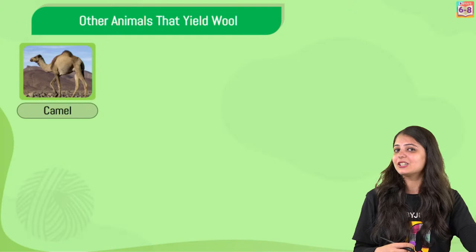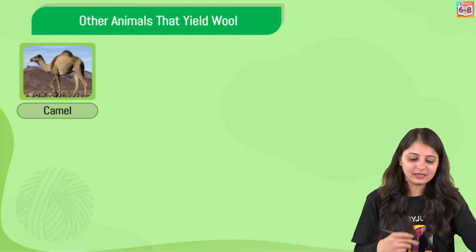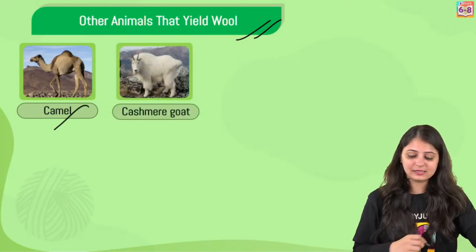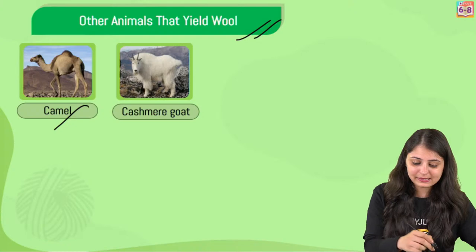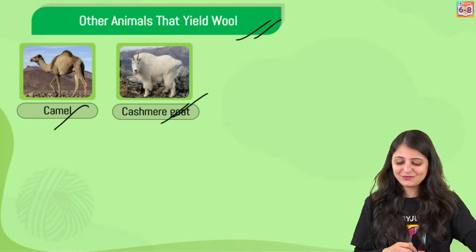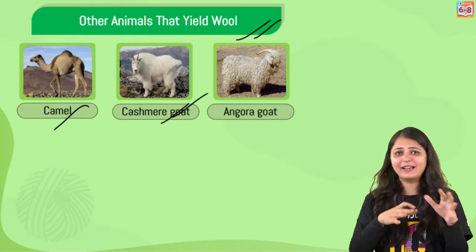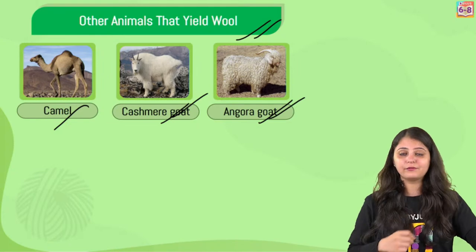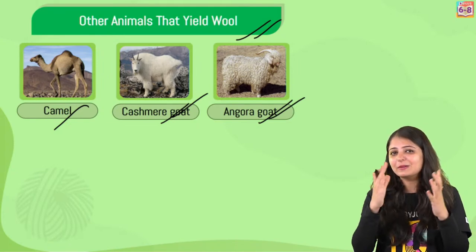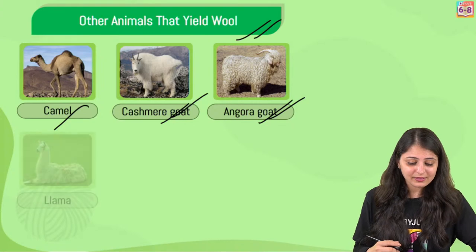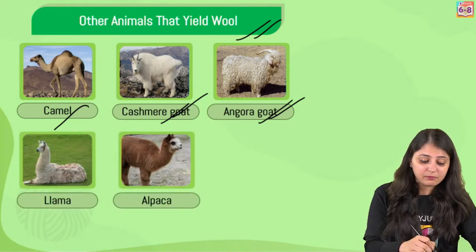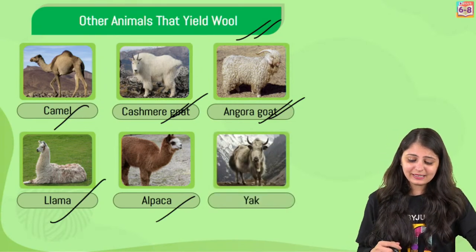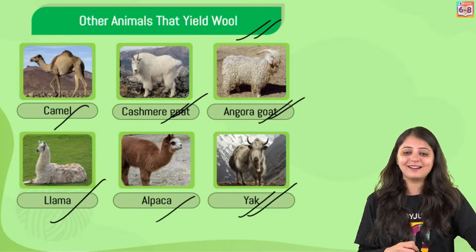There are sheep and other animals also that give us wool. For example, the fur on the body of a camel gives us wool. Then cashmere goat produces cashmere wool and we can have fine, beautiful shawls out of it. Then we've got angora wool obtained from angora goat - this is really famous in Jammu Kashmir. Next, llama and alpaca are found in South America and they also give us wool. Finally, yak is also common in Tibet and Ladakh.